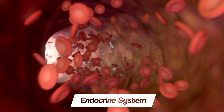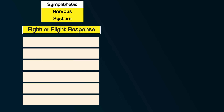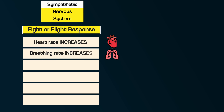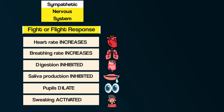Now we come to the endocrine system. The adrenal gland releases the hormone adrenaline into the bloodstream. Adrenaline causes a number of changes in the body, including increased heart rate, increased breathing rate, digestion is inhibited, and saliva production is inhibited — that's why you may have a dry mouth after the ride. Your pupils dilate and you start sweating. All of this happens in an instant as soon as the threat is detected. This is an automatic reaction in the body — you don't have to tell your body to do this.